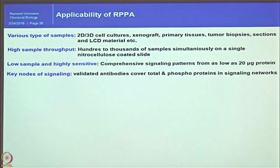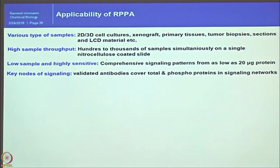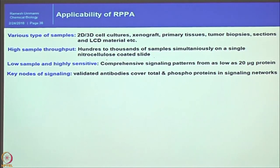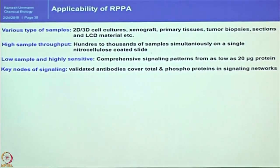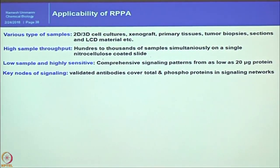Now imagine this technique is in your hands — how you apply it to your research is up to you. Various sample types can be analyzed: 2D or 3D cell cultures, xenografts, primary tissues, tumor biopsies, tissue sections, laser capture microdissection materials. It is high throughput with low sample requirements — comprehensive signaling patterns from as low as 20 micrograms of protein, which is not even sufficient for one protein and one housekeeping gene on Western blot. Key nodes of signaling can be covered using validated antibodies for total and phosphoproteins so you can reconstruct signaling networks when cells are stimulated with certain factors or drugs.